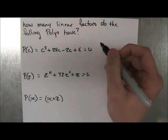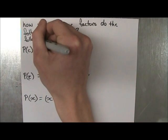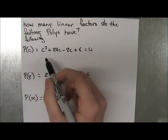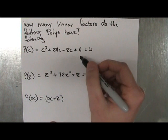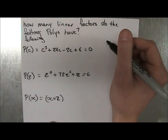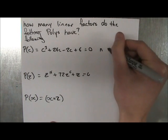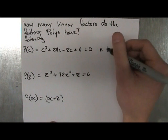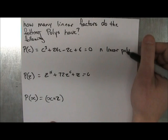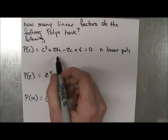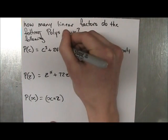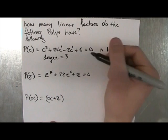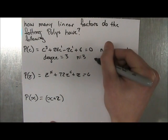How many linear factors do the following, I spelled following wrong. Apparently engineers can't write. Um, polys have, the polynomials. So we have our polynomial p of c is equal to c cubed plus 24c minus 2c plus 6. So if we want the number of linear factors, remember there's n linear factors in a polynomial. And n is the degree of the polynomial. So all we have to do is find the degree, like in the last questions, and we know how many linear factors there are. So we look for the highest degree of c, and we see that we have c to the 3, c to the 1, and c to the 1. So the degree of this polynomial is equal to 3, and therefore n is equal to 3. And therefore we have three linear factors.